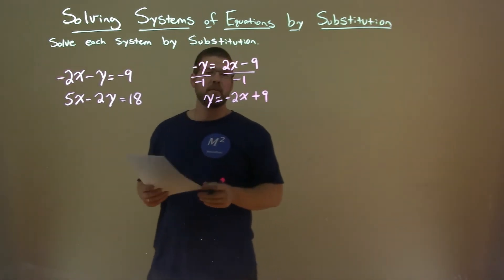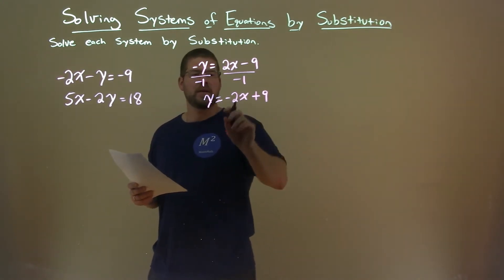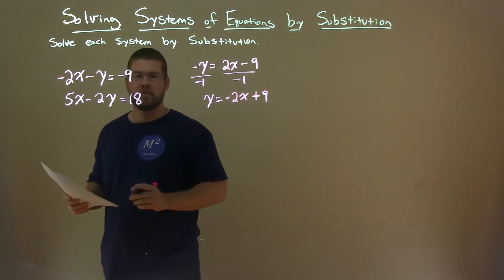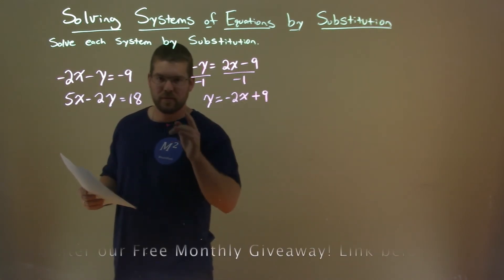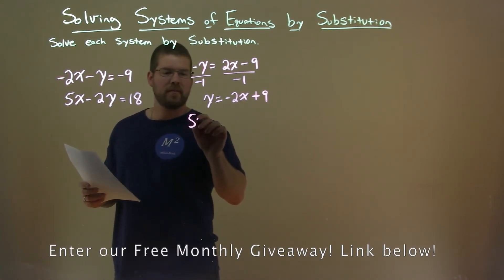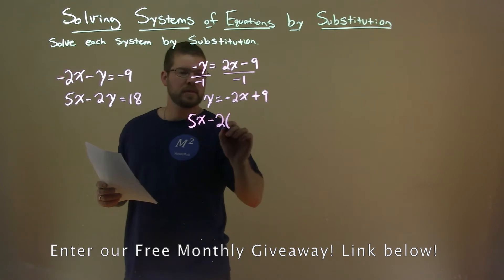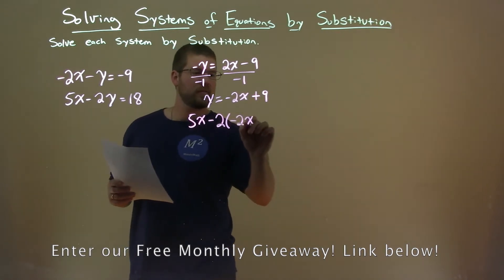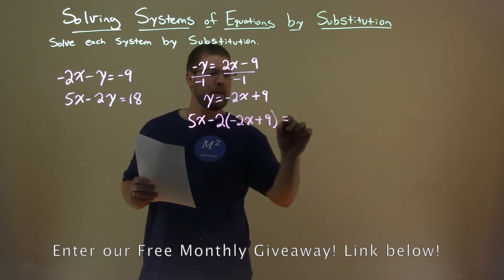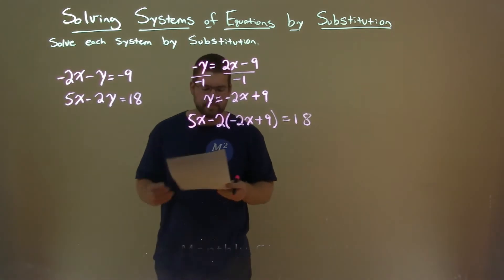So with that information, we're going to take that y value being negative 2x plus 9 and plug it into the y value of our second equation. Hence, substitution. 5x here minus 2 times y, minus 2x plus 9, equals 18.